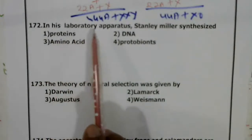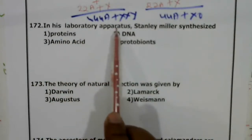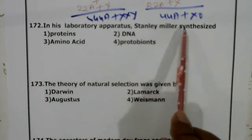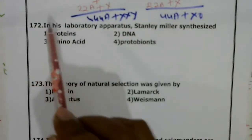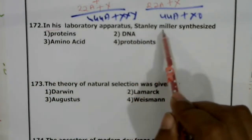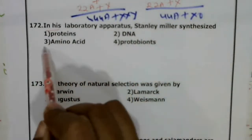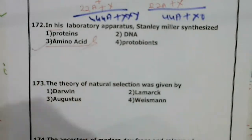Question 173: In his laboratory apparatus, Stanley Miller synthesized amino acids. Correct answer is 3.